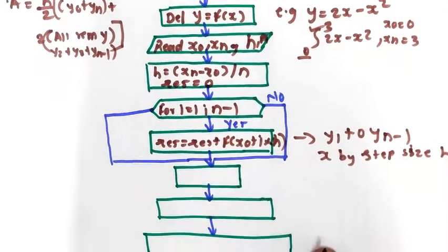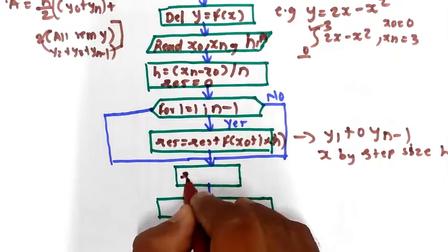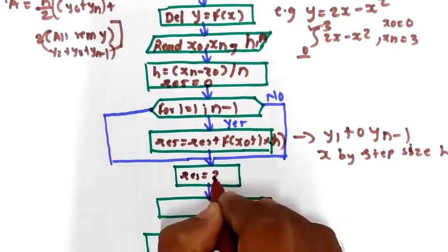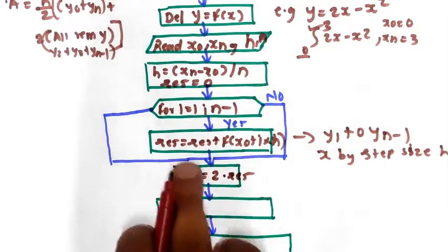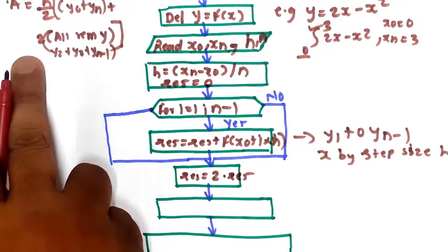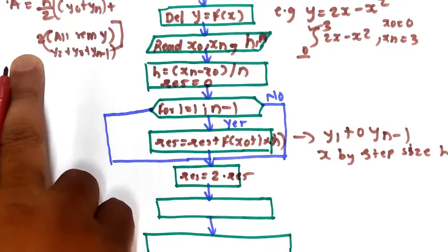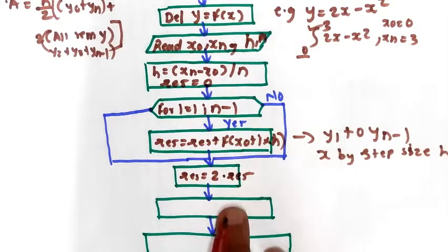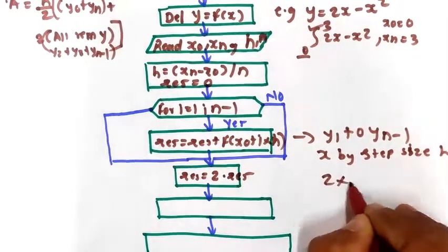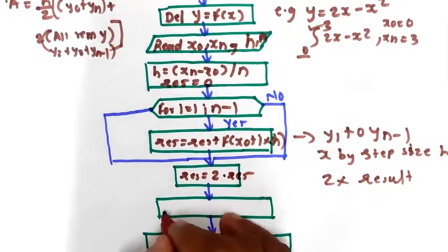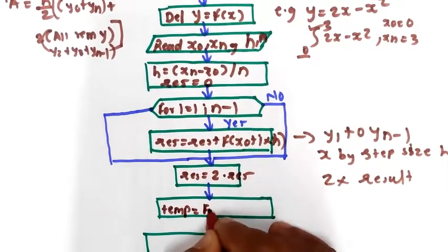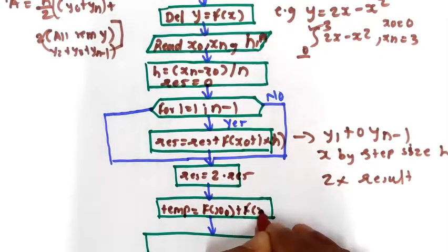Next, result is equal to 2 times result. So whatever result we have got from the loop, we multiply it by 2 — that gives us 2 times the sum of the intermediate terms. Then we take a temporary term: temp equals f(x0) plus f(xn). So we calculate y0 equal to f(x0) and yn equal to f(xn).